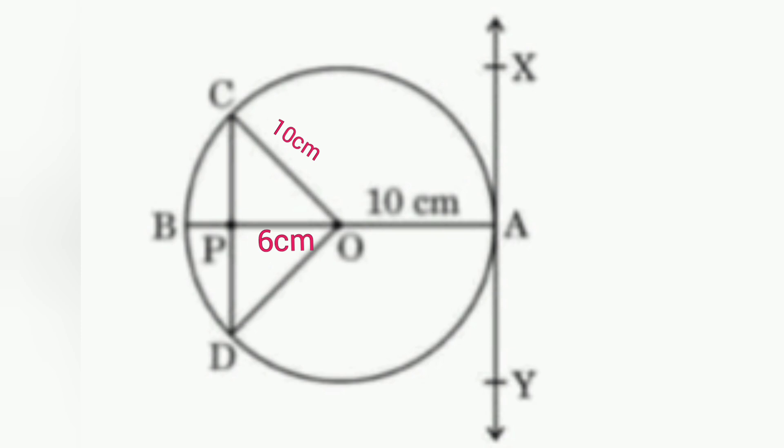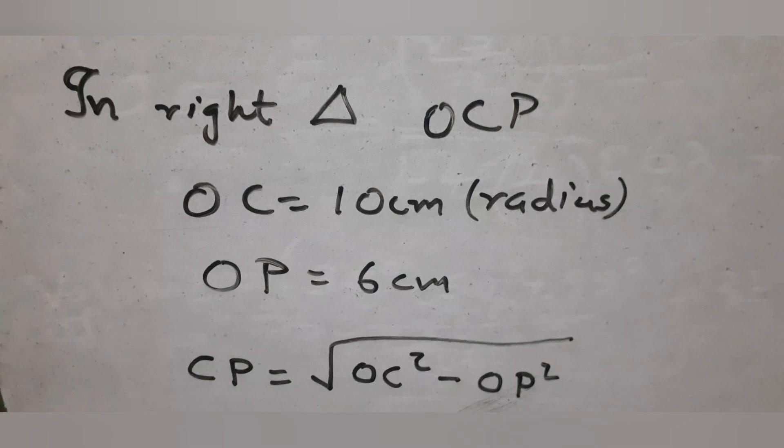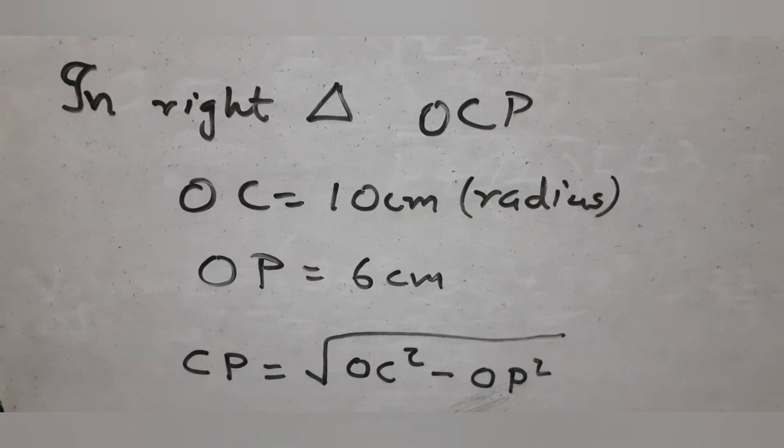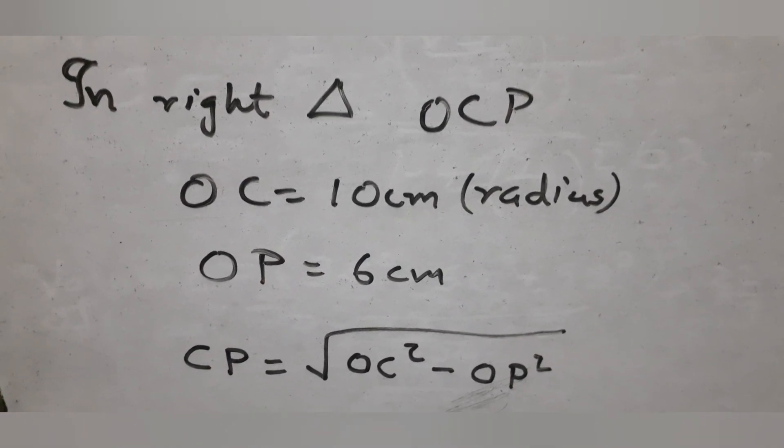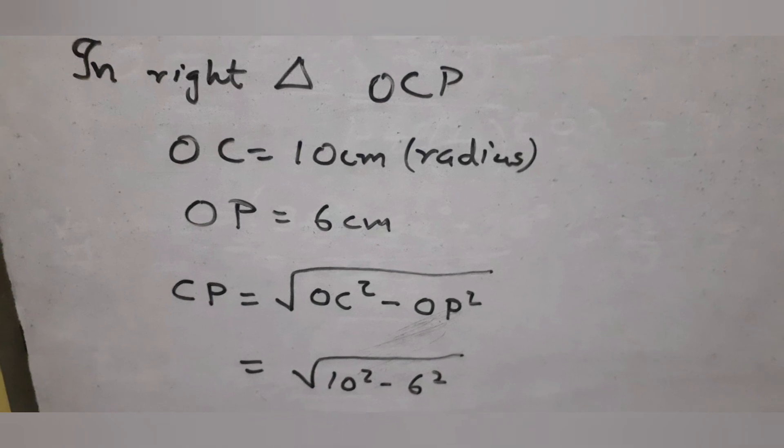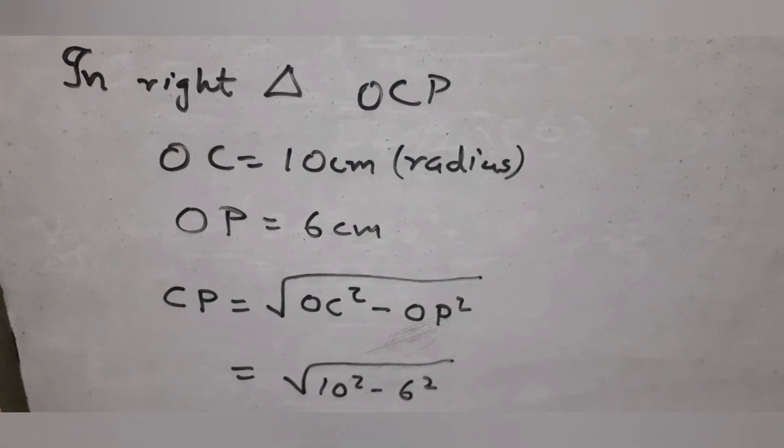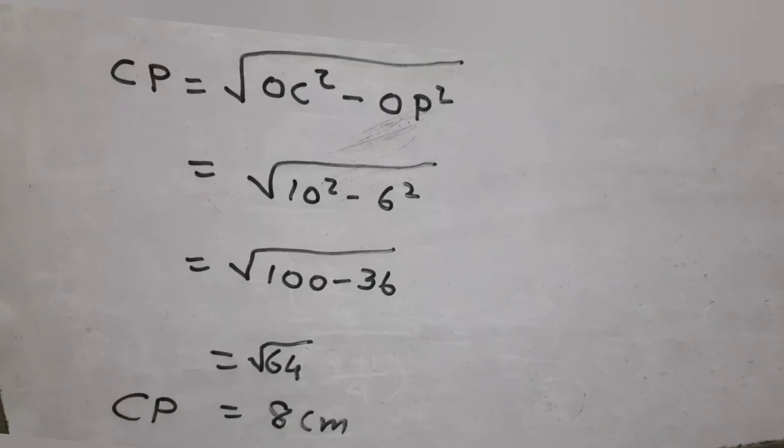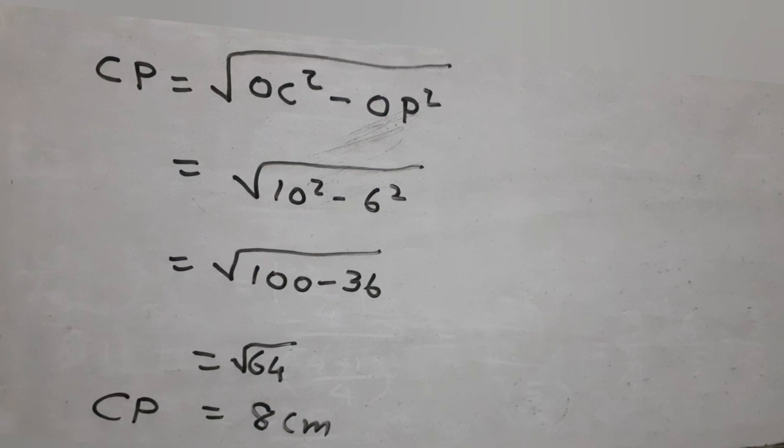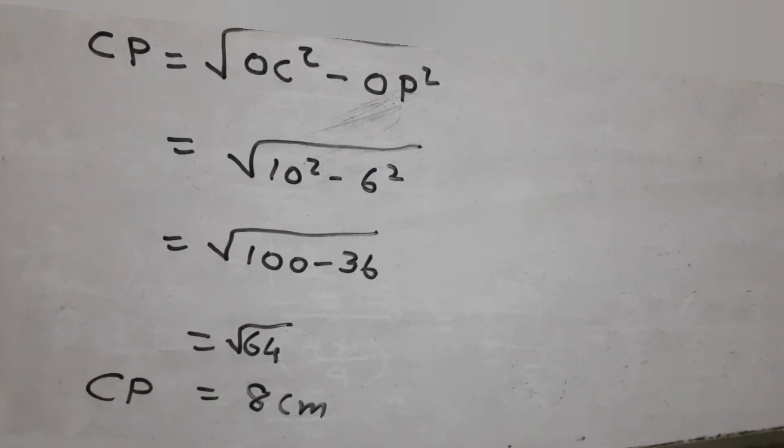We will use the Pythagorean theorem to find CP. Using the Pythagorean theorem, CP equals the square root of 10 squared minus 6 squared. CP equals 8 centimeters.